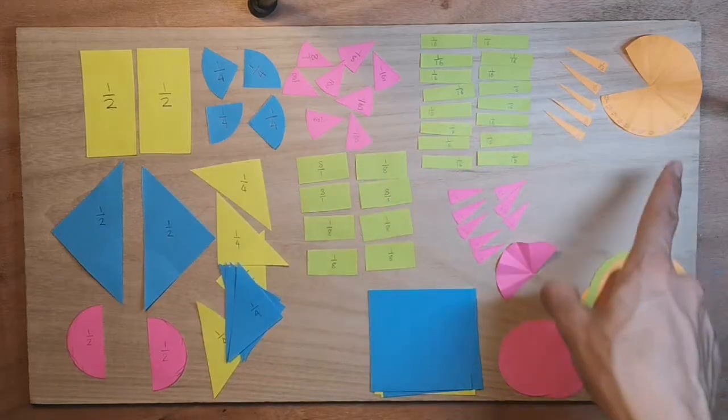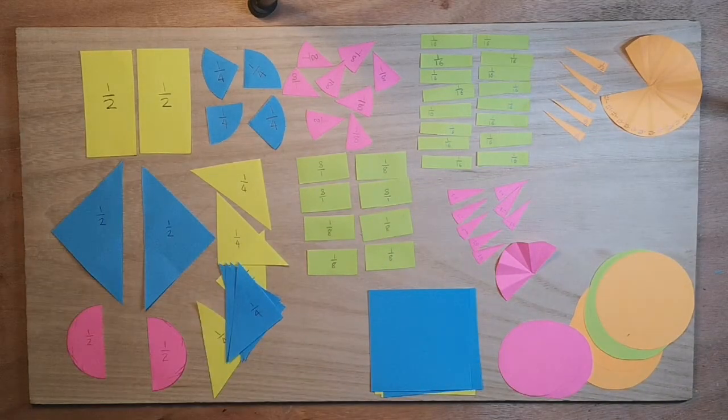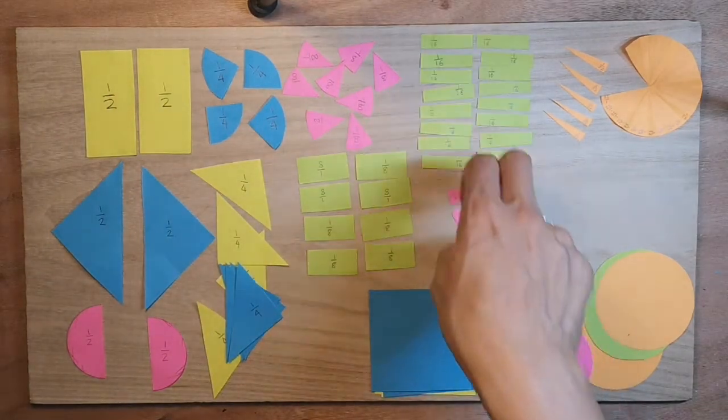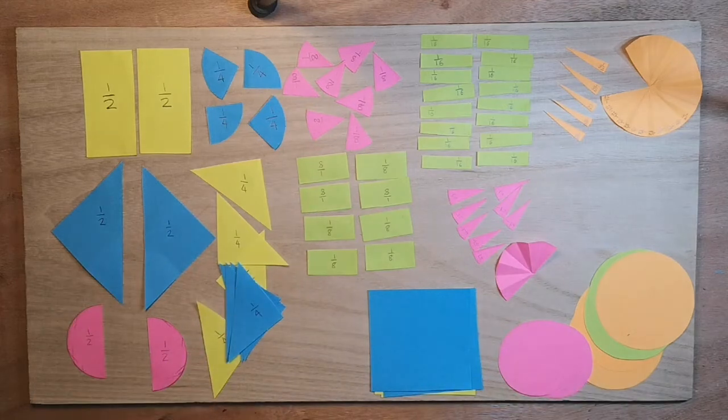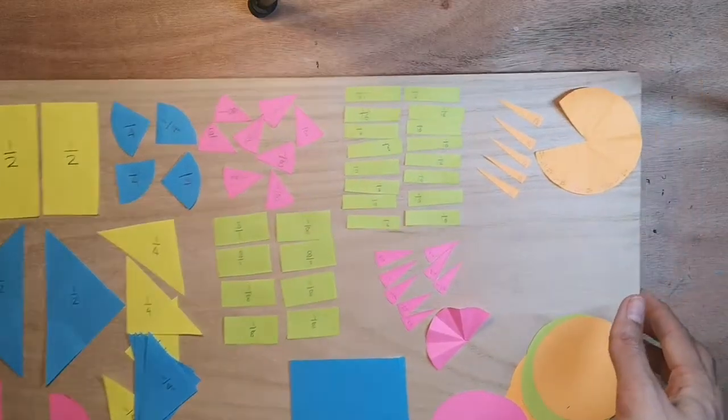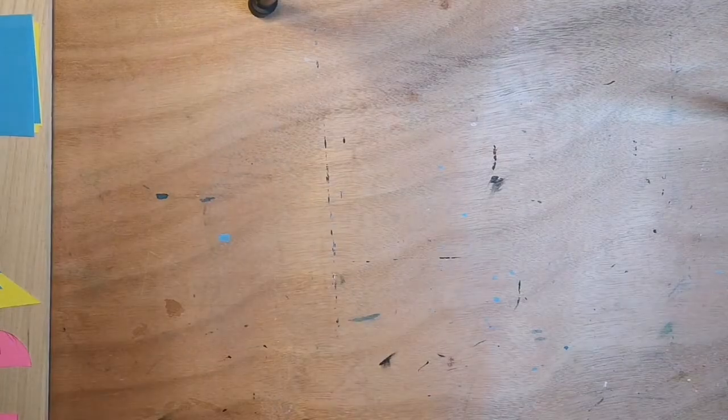So now that I've got all my different shapes, my different fractions cut out. I've got halves, quarters, eighths, sixteenths, even thirty-seconds. And I've got my whole shapes. I'm going to now start to use those to create my art. So what I'm going to do is carefully move those aside, so that I can still get hold of them.